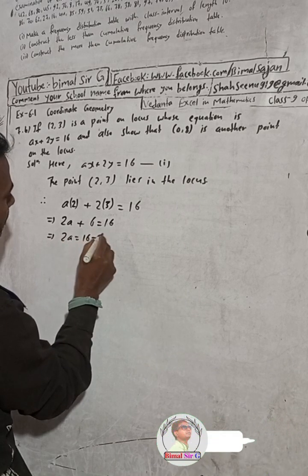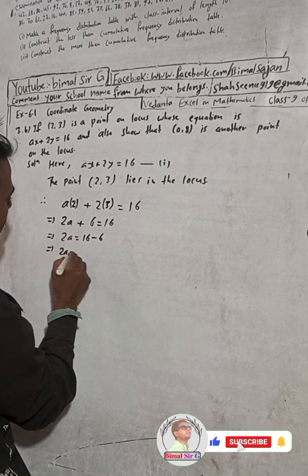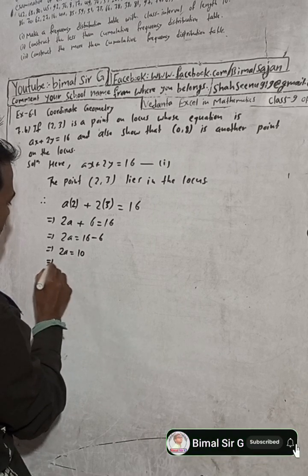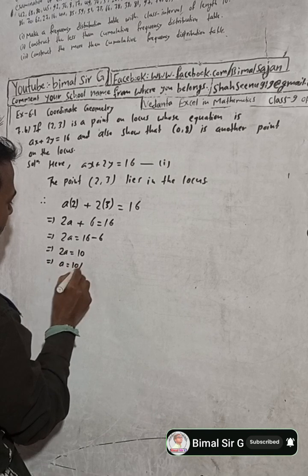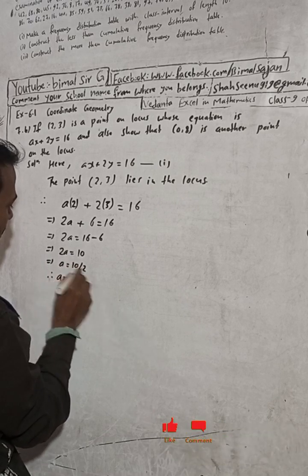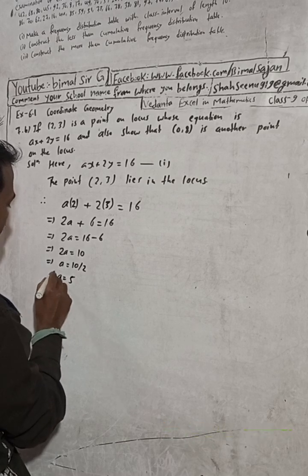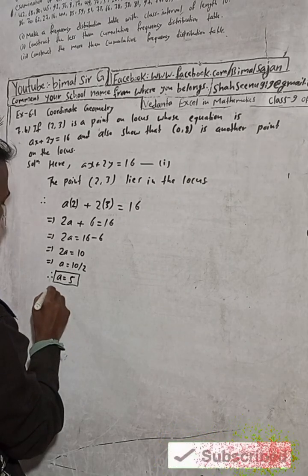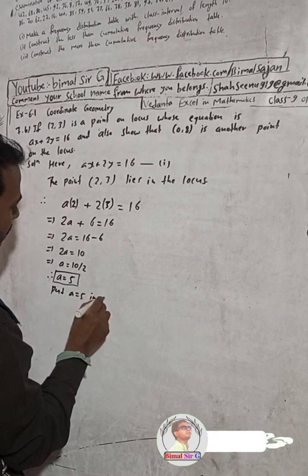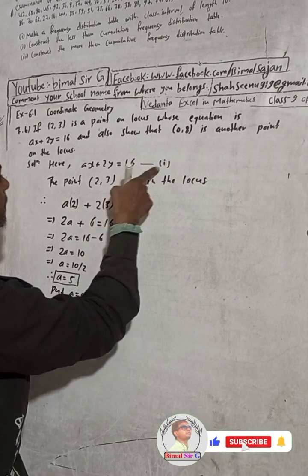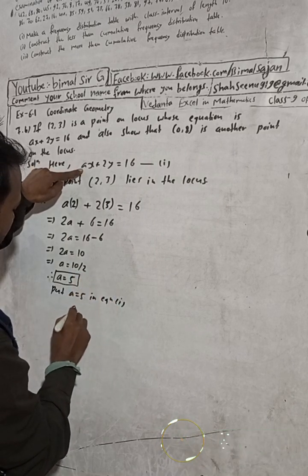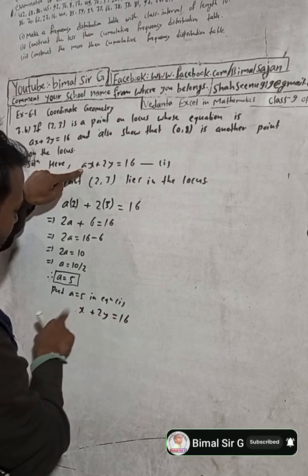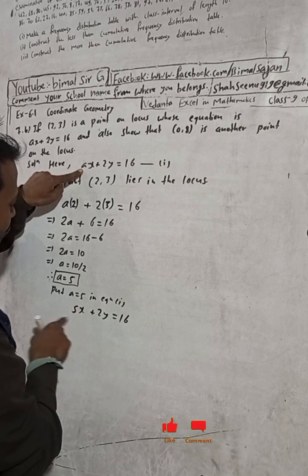So 2a = 16 − 6, which gives 2a = 10. Dividing both sides by 2, therefore a = 5. Now put a = 5 in equation 1: 5x + 2y = 16. This is equation 2.